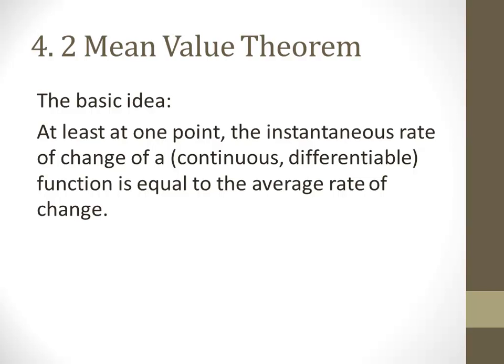What the mean value theorem is saying is that that secant line — that line from A to B at the beginning and end of that interval — at some point on that interval, at least one place, the tangent to that function is going to be parallel to that secant line. So at least one point on a particular interval, the instantaneous rate of change is going to be equal to the average rate of change.